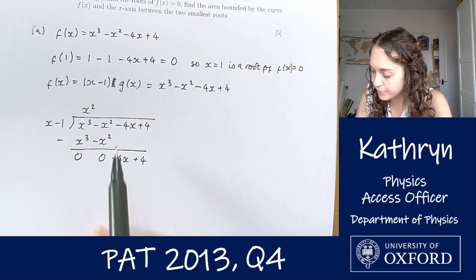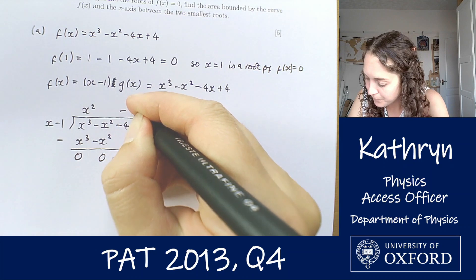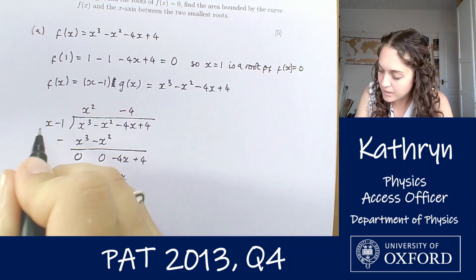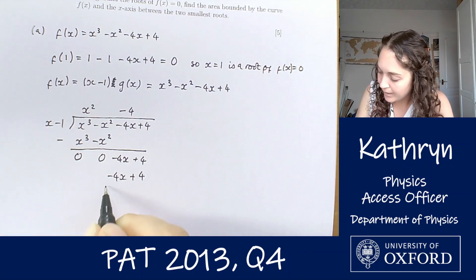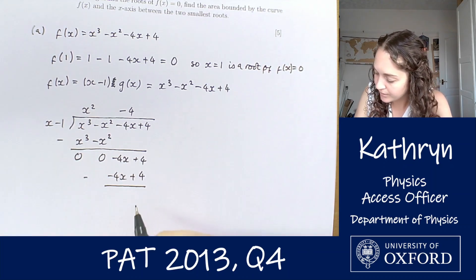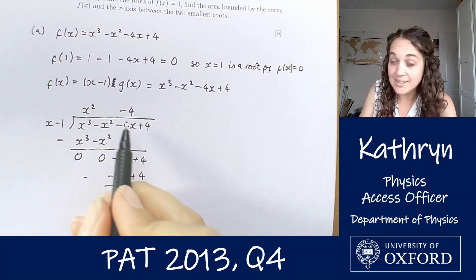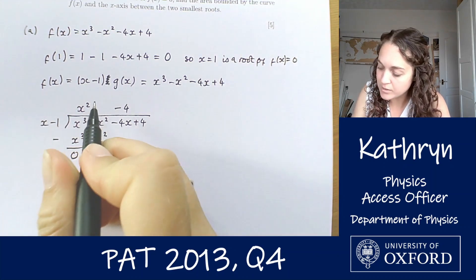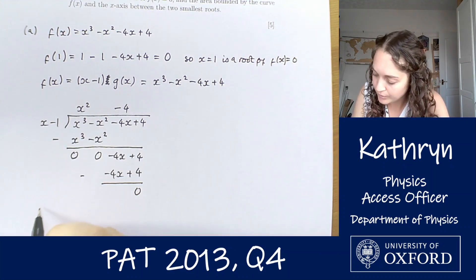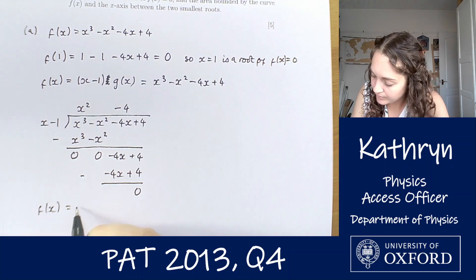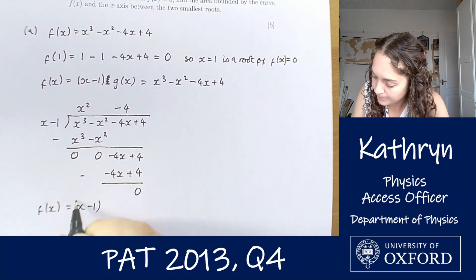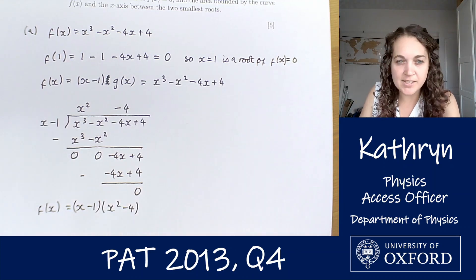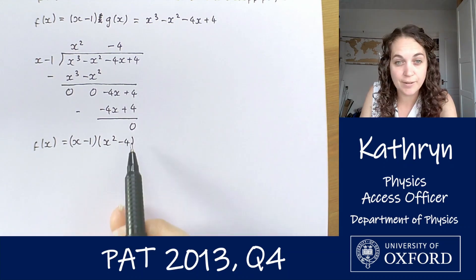So x goes into minus 4x minus 4 times. Minus 4 times x is minus 4x, minus 4 times minus 1 is plus 4. And if we subtract those off from each other, we get 0. This shows that f(x) equals x minus 1 times x squared minus 4. But we haven't factorized this enough yet to find the roots because we still need to factorize this.